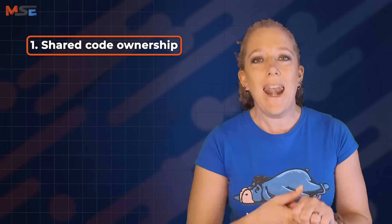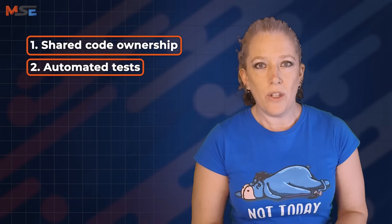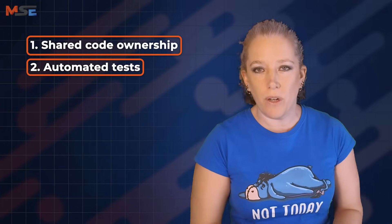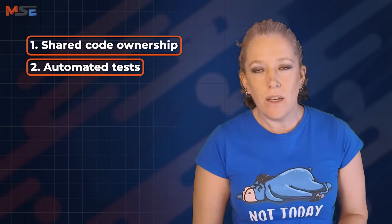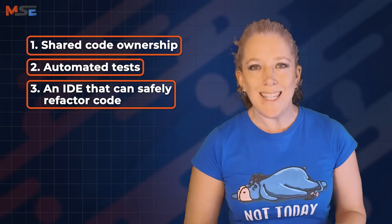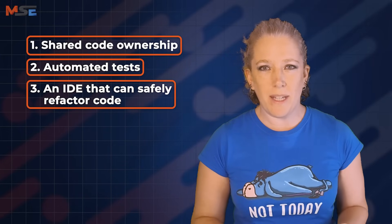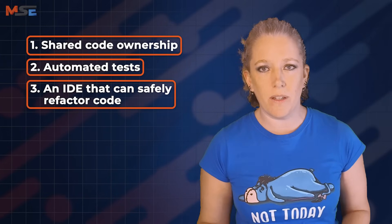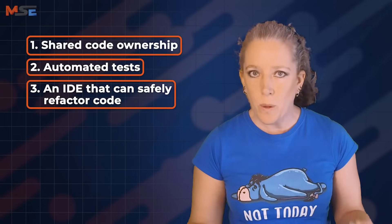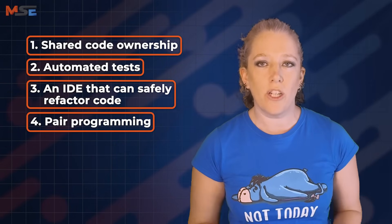So in order to be in a position to have no comments in the code, you may need: shared code ownership — you are allowed to make changes to code you didn't write; an existing set of automated tests to make sure changes haven't broken anything and to refer to for understanding the intent; an IDE that can automatically and safely refactor code for you — AI tools are an option, but the non-deterministic nature of these tools makes me a little nervous, especially when your IDE can do it safely without changing the intent; and pair programming to more effectively share knowledge around the team.